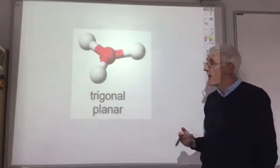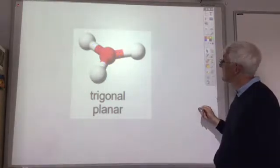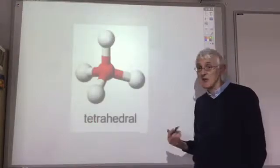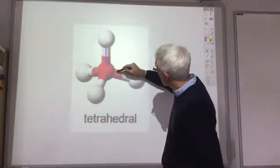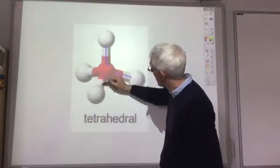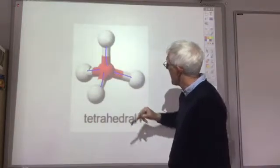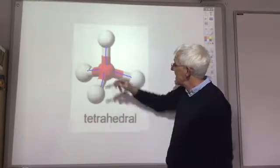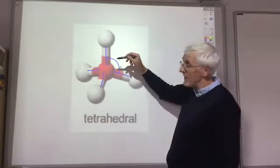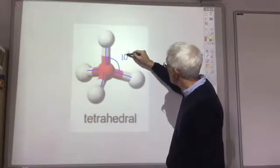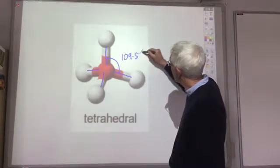If we had four electron pairs, then we get our classic tetrahedral shape. There's one electron pair, two, three, four. And in this case, this classic tetrahedral, the angle between the different electron pairs is 109.5 degrees.